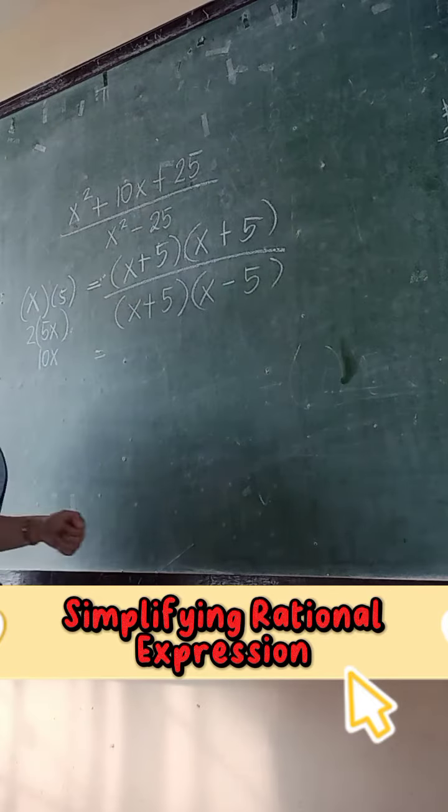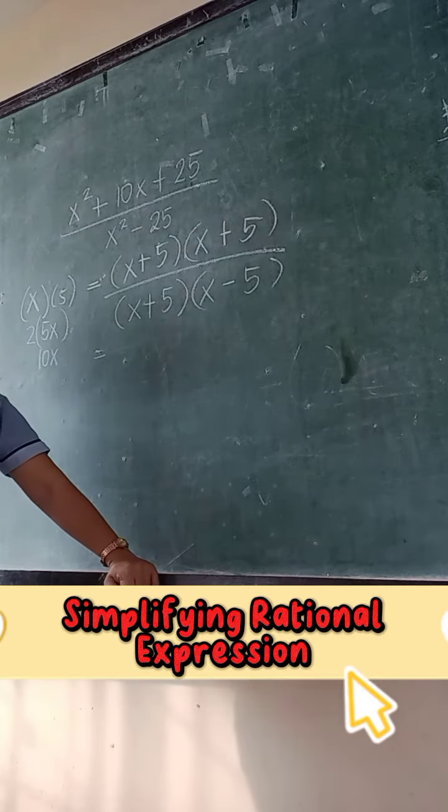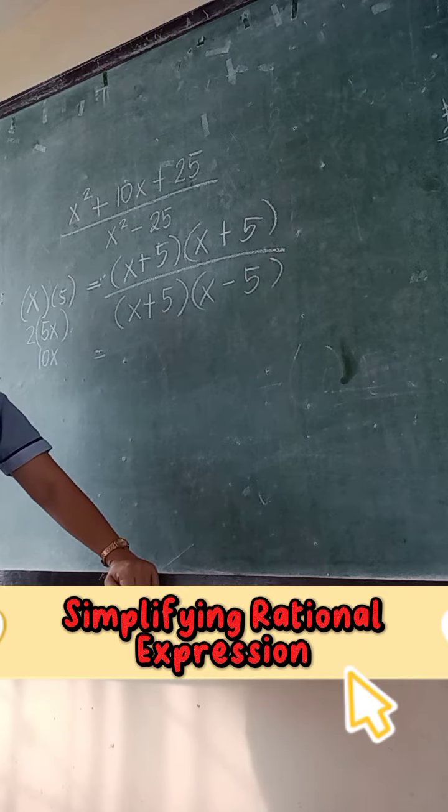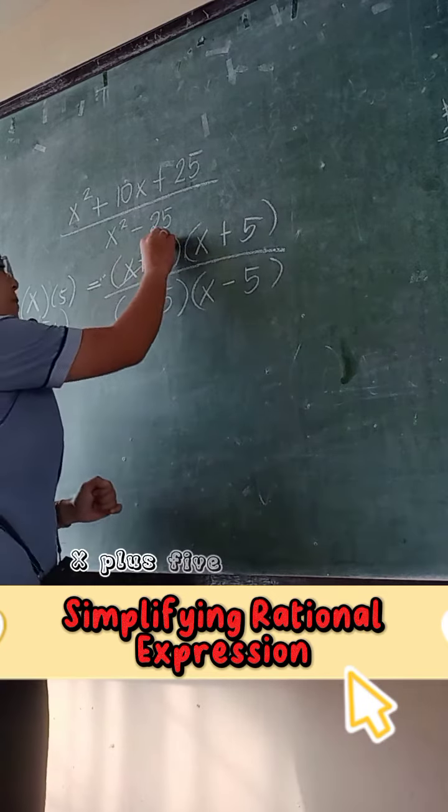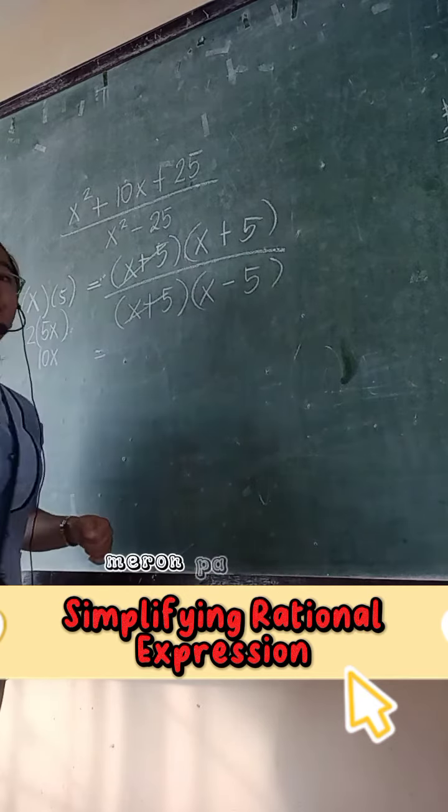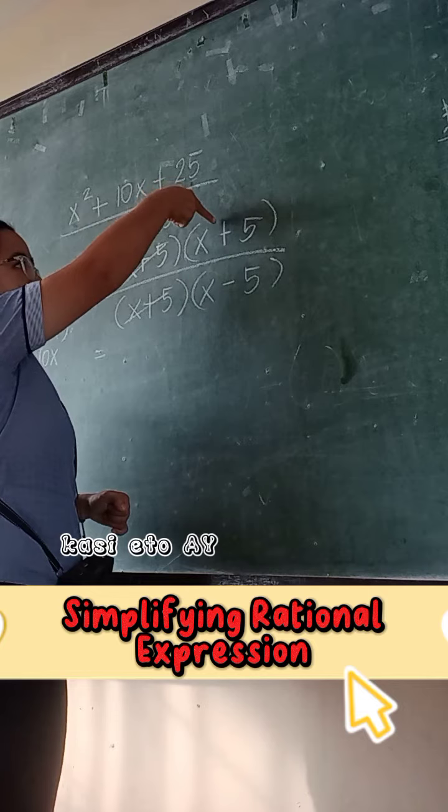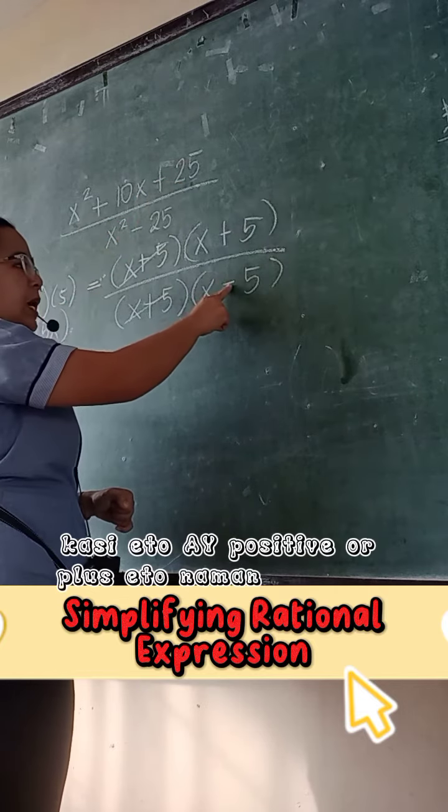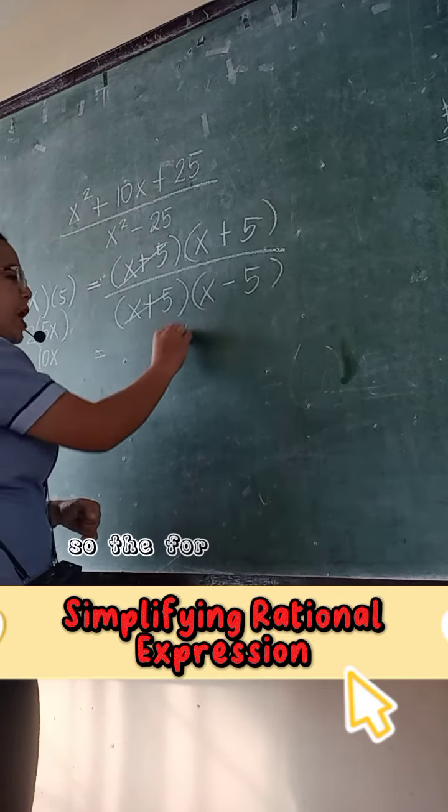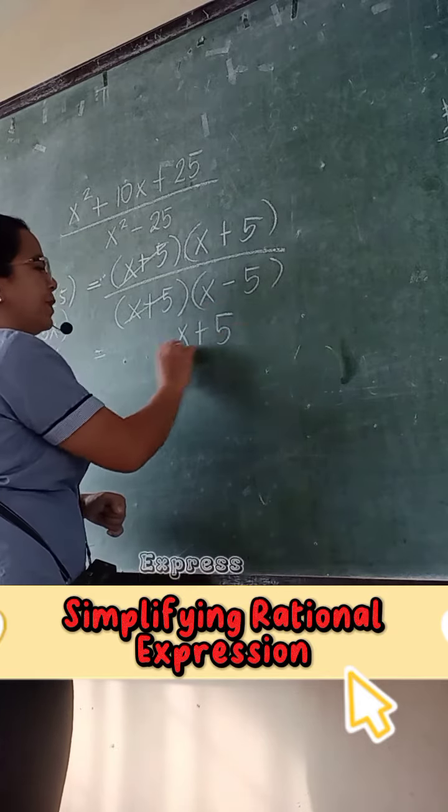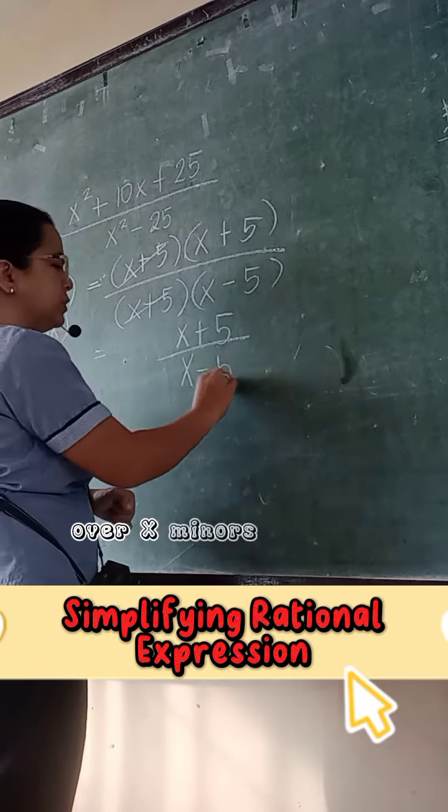And then apply cancellation na. Sino ang pwede natin i-cancel? X plus 5 and x plus? Meron pa ba? 5. Okay, pwede natin i-cancel kasi ito ay positive or plus. Ito naman ay minus. So therefore, our answer is x plus 5 over x minus 5.